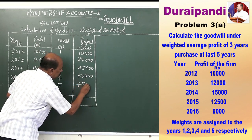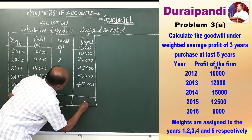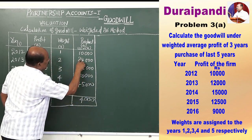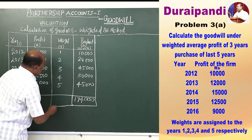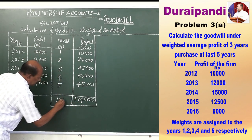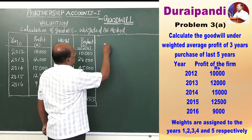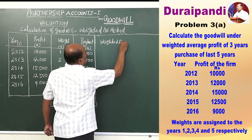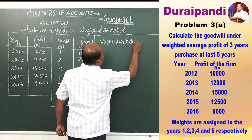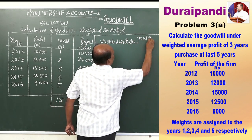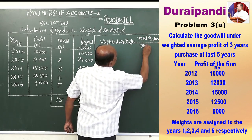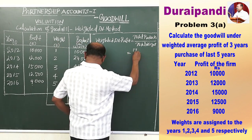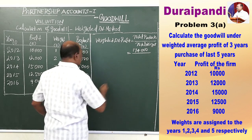Now we have to calculate the weighted average profit. The total of the product column is 1,74,000, and the total of the weights is 15. The weighted average profit equals total product divided by total weight, that is 1,74,000 divided by 15.